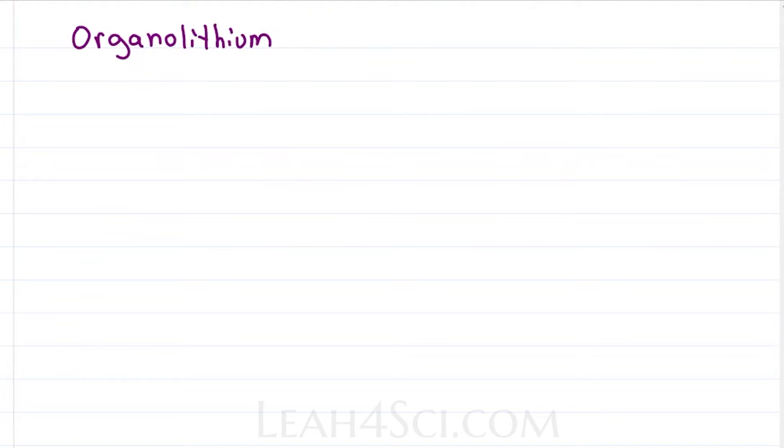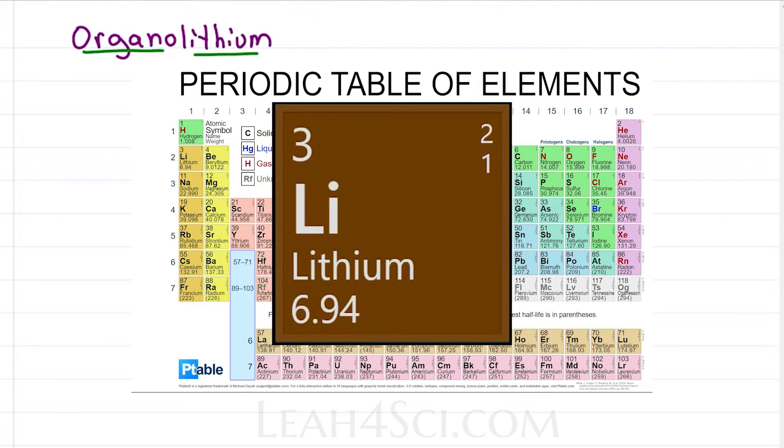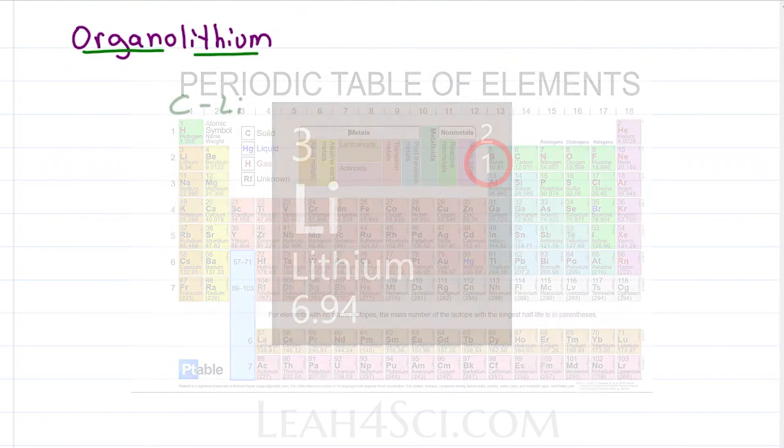The next organometallic we'll look at is the organolithium, which as the name implies has organo, a source of carbon, bound to a lithium atom. If you look back at the periodic table, you'll remember that lithium in group 1 only has one valence electron and is very reactive.